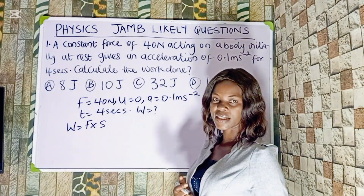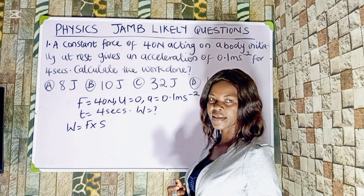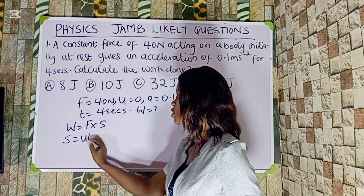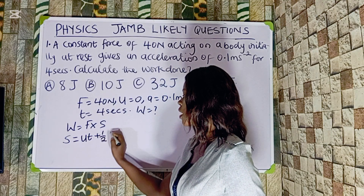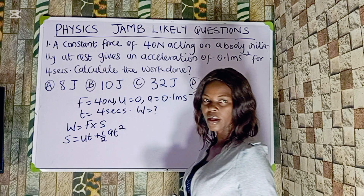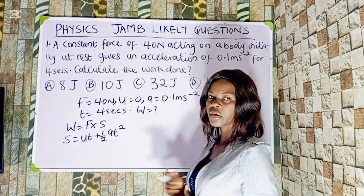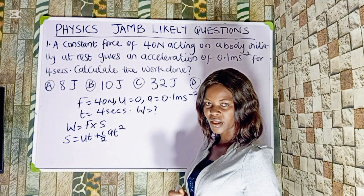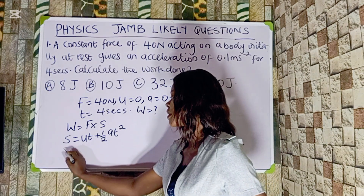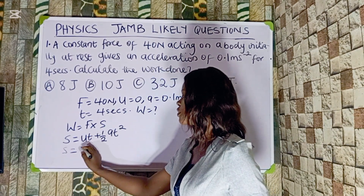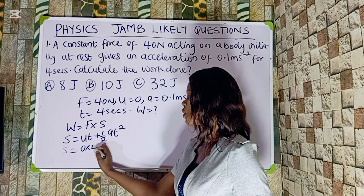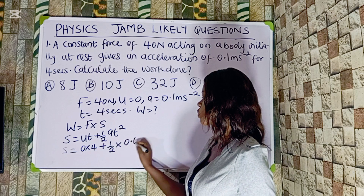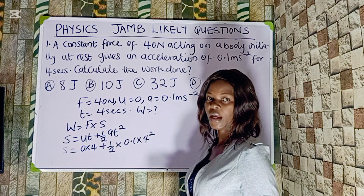We have force but we don't have distance, so I'm going to use the equation of motion to get our distance. We use the equation: x = ut + ½at². Since we have all the parameters, we substitute: u is 0, t is 4, a is 0.1. So x = 0×4 + ½ × 0.1 × 4².